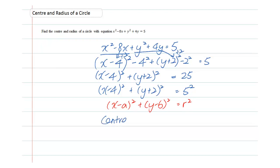The center of the circle given by coordinates (a, b) is equal to (4, -2). And your radius, which is represented by r, is equal to 5.